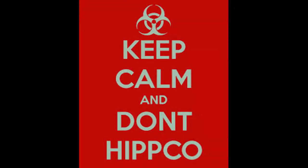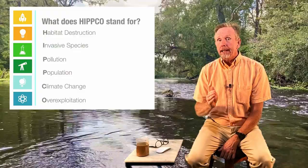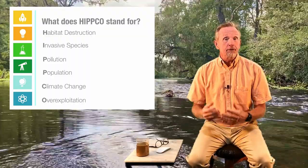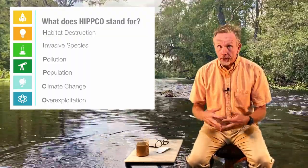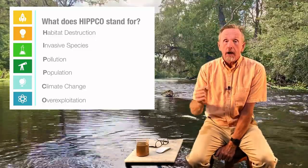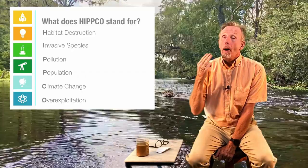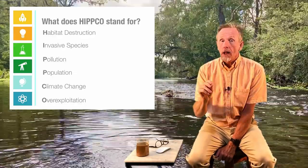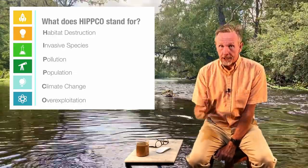This is one you really need to know. The acronym HIPCO — it's a mnemonic device like PEMDAS in math. H-I-P-P-C-O. These are our greatest threats to species extinctions. They are: habitat loss, invasive species, population — mainly population growth and resource use — pollution, climate change, and over-exploitation. HIPCO is one you've got to be able to pull out at a drop of a hat and list it out.